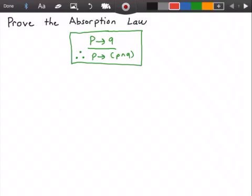Now another way of writing this as its corresponding tautology would be as follows. We have P implies Q implies P implies P and Q.